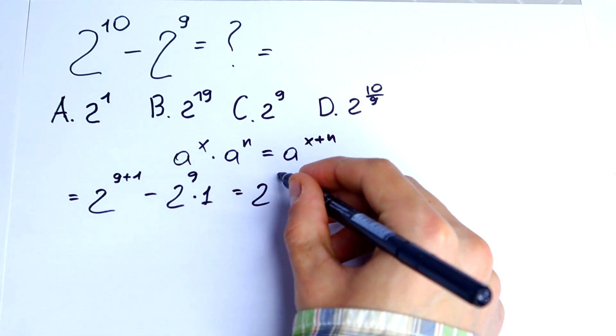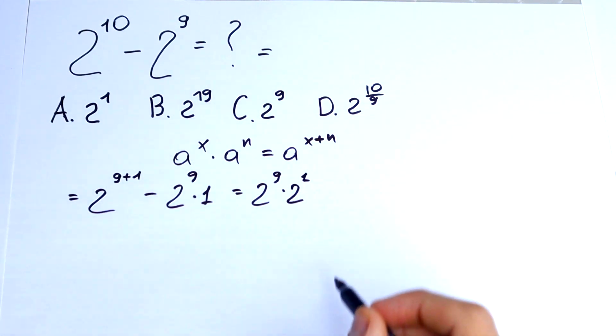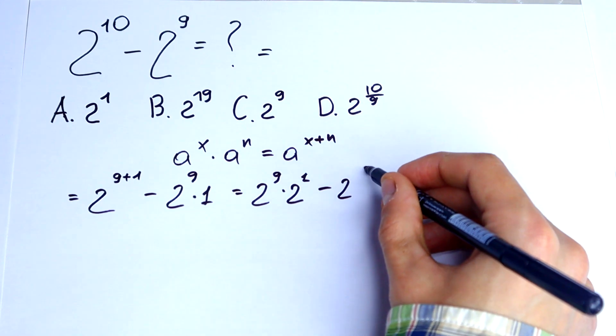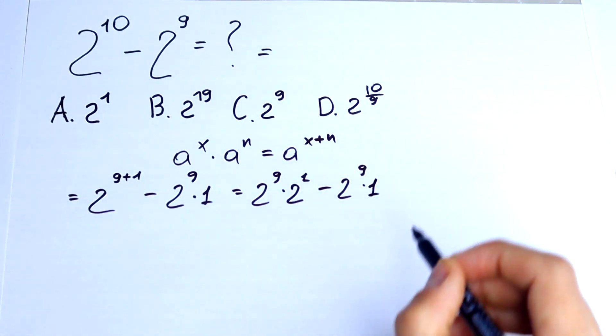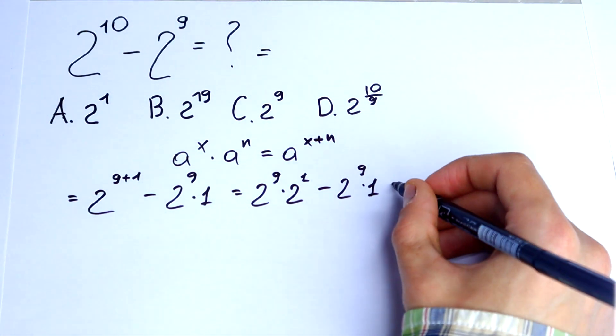2 to the power 9 times 2 to the first power minus 2 to the power 9 times 1. Let's factor out 2 to the power 9.